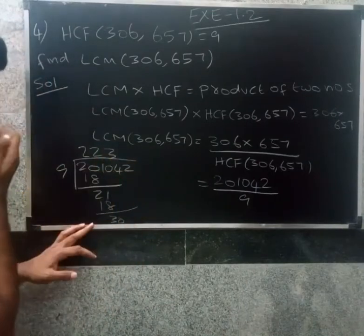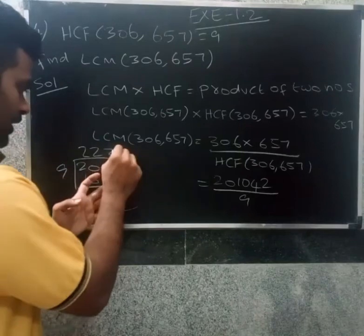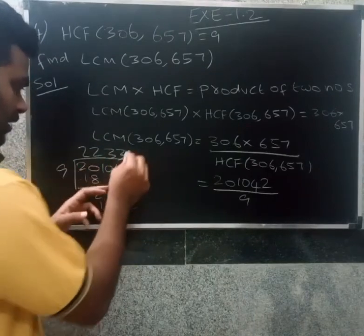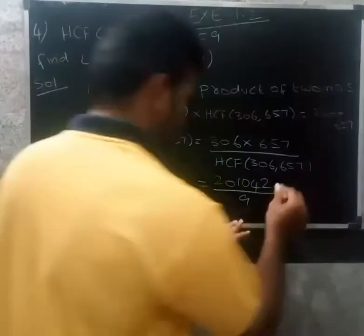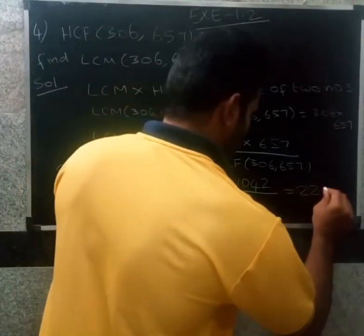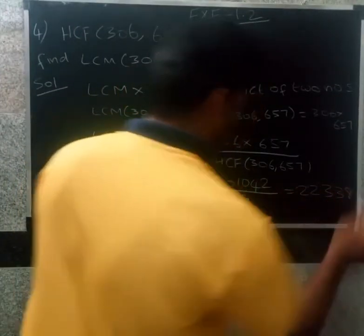Three nines are 27, remainder 7. So 8. Answer equals 22,338.